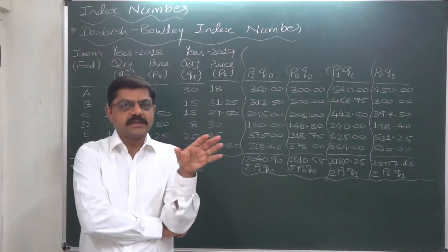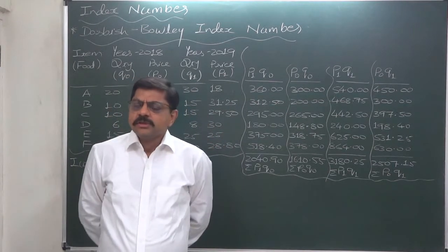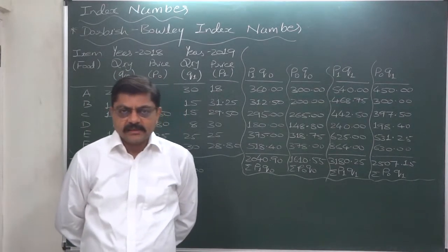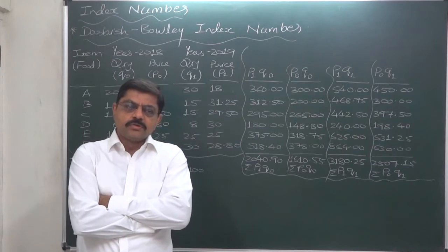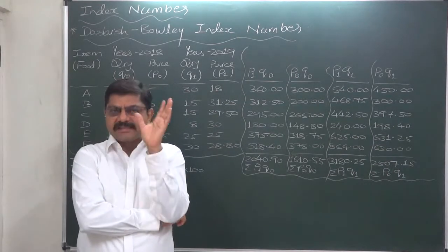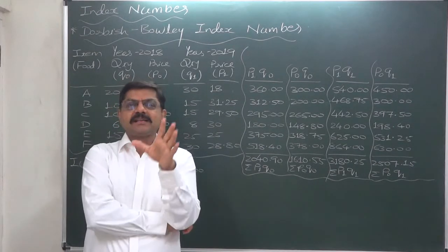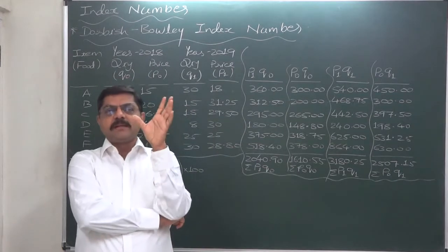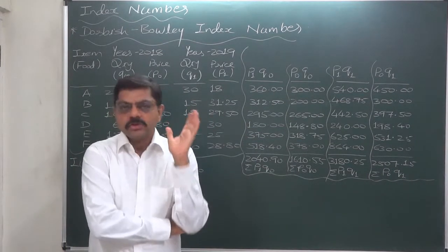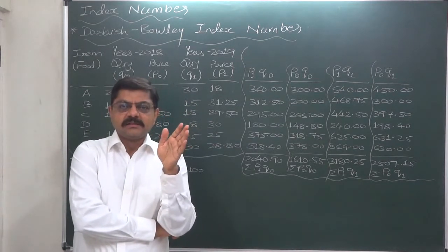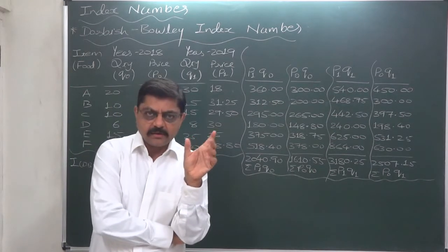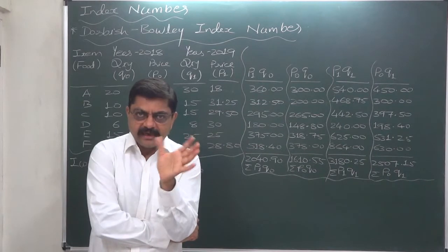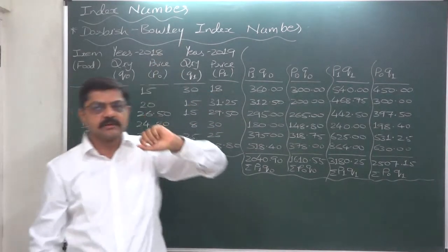Fisher's index number is the geometric mean of Laspeyres' index number and Paasche's index number. A somewhat easier method has been suggested by Dorbish and Bowley. They suggested that to consider the quantities — the statistical data of both the years, base year as well as current year — we should take the simple arithmetic mean of Laspeyres and Paasche index numbers as the final index number.